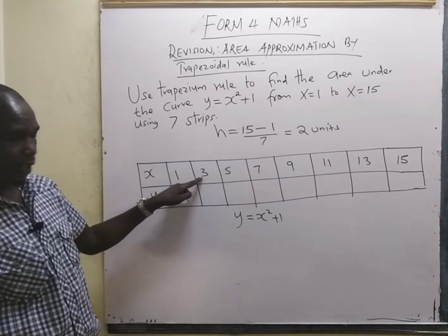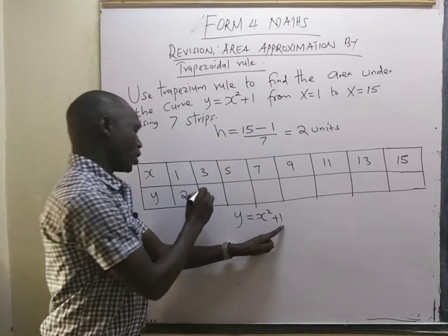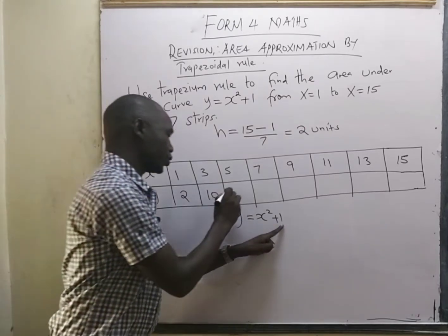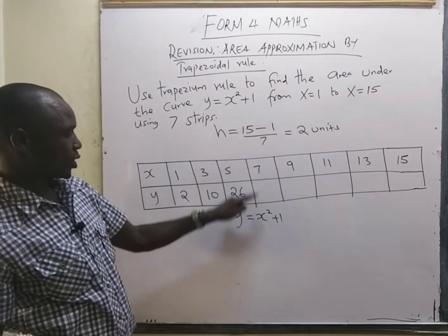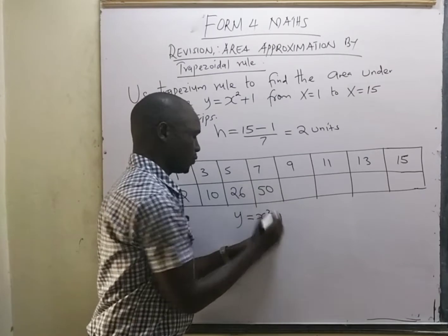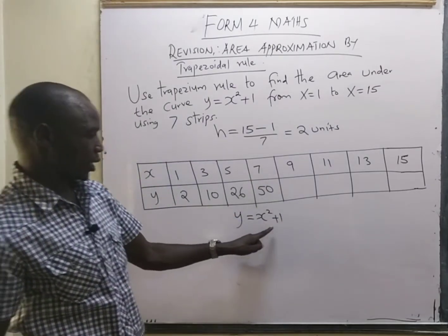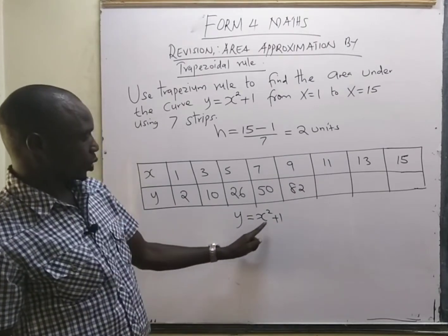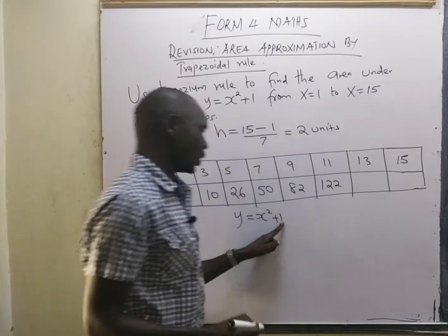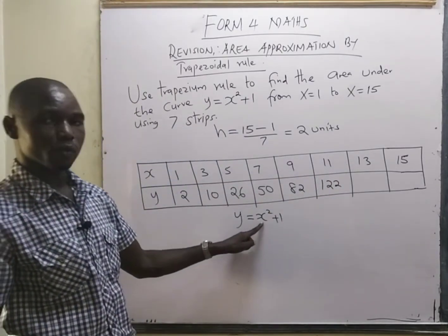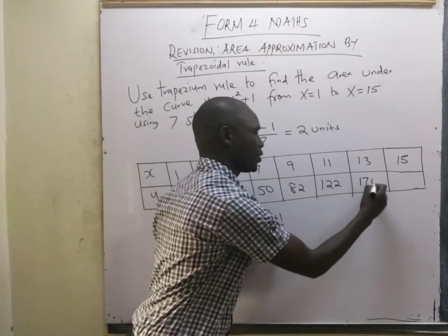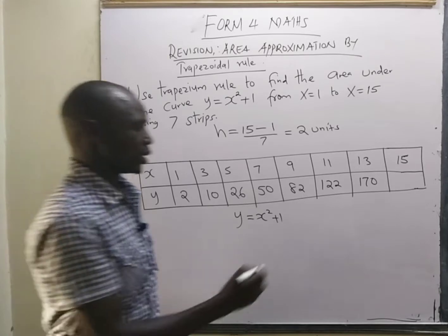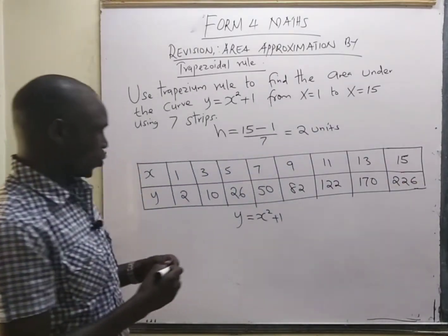Continuing the substitution: x = 5 gives 5² + 1 = 26; x = 7 gives 7² + 1 = 50; x = 9 gives 9² + 1 = 82; x = 11 gives 11² + 1 = 122; x = 13 gives 13² + 1 = 170; and x = 15 gives 15² + 1 = 226.